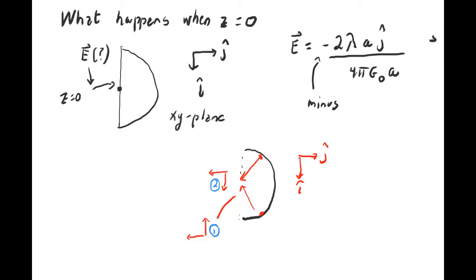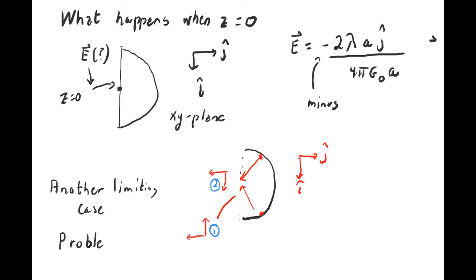Another limiting case you could explore: you know the answer for a complete circular loop, either at z equals zero or at z nonzero — we did that last lecture. If you repeat this calculation for the other part of the semicircle and add those two results together, you should get what you know from lecture five. I'll leave that as an exercise in problem set six.